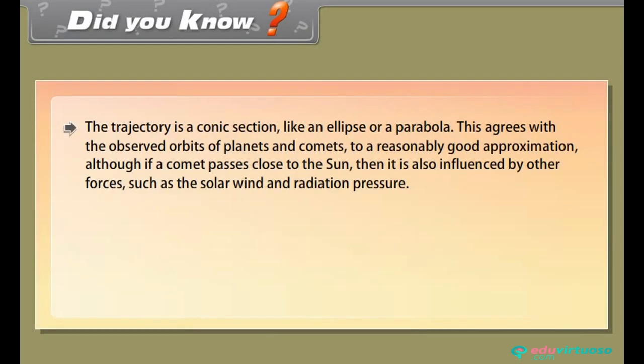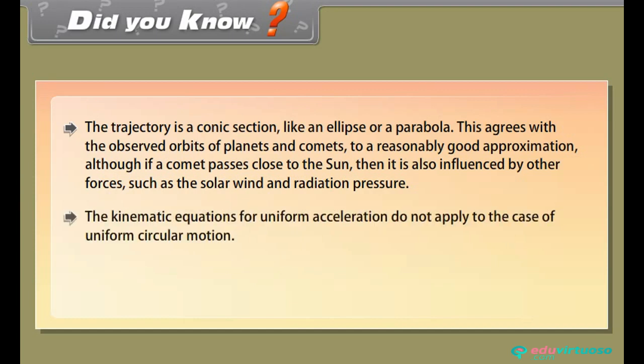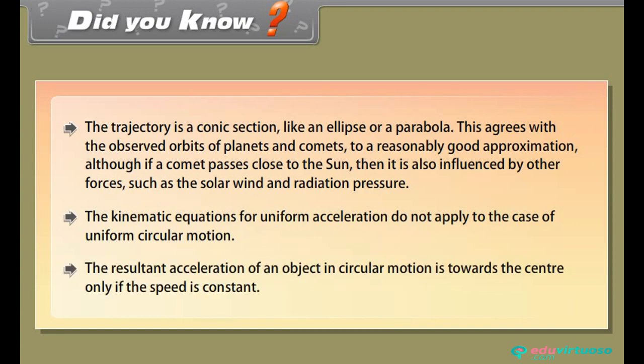Did you know? The trajectory is a conic section like an ellipse or a parabola. This agrees with the observed orbits of planets and comets to a reasonably good approximation. Although, if a comet passes close to the sun, then it is also influenced by other forces such as the solar wind and radiation pressure. The kinematic equations for uniform acceleration do not apply to the case of uniform circular motion. The resultant acceleration of an object in circular motion is towards the center only if the speed is constant.